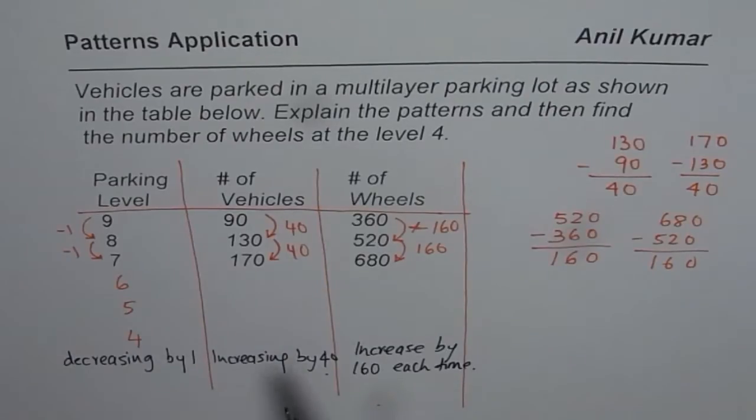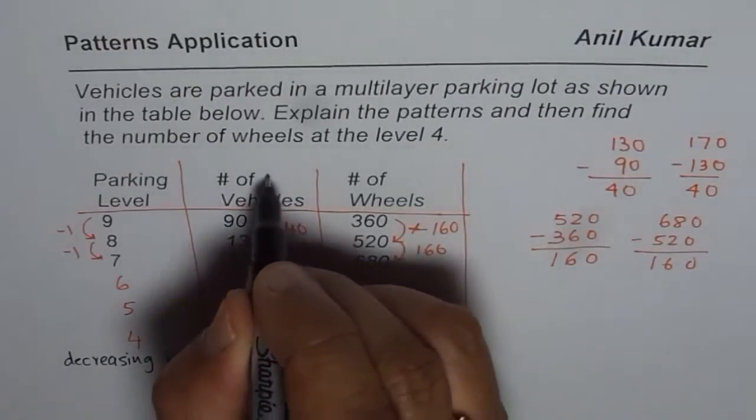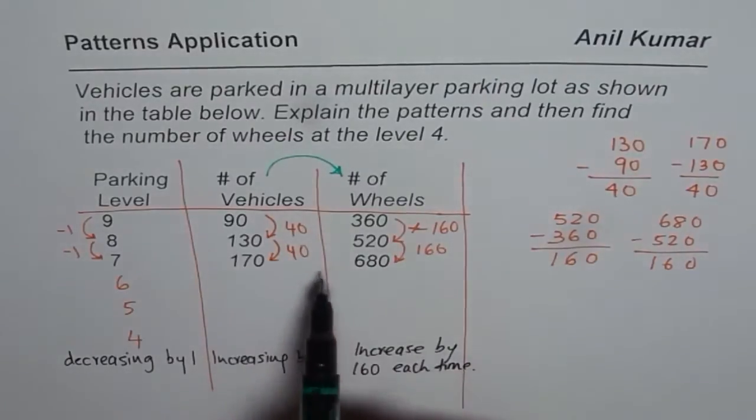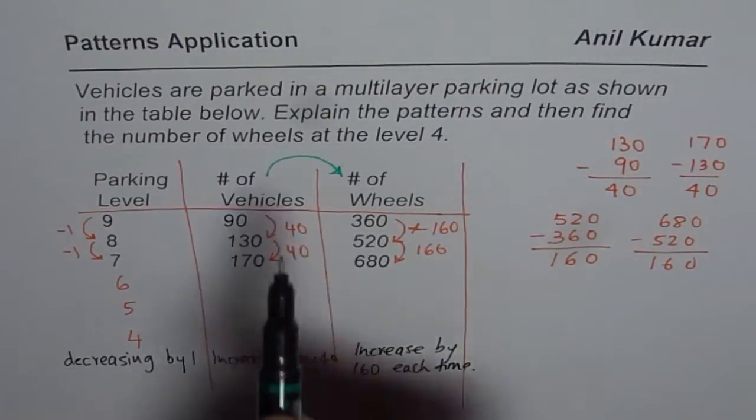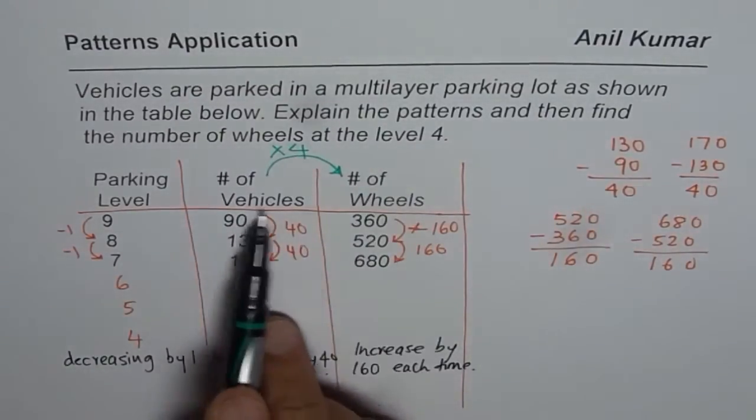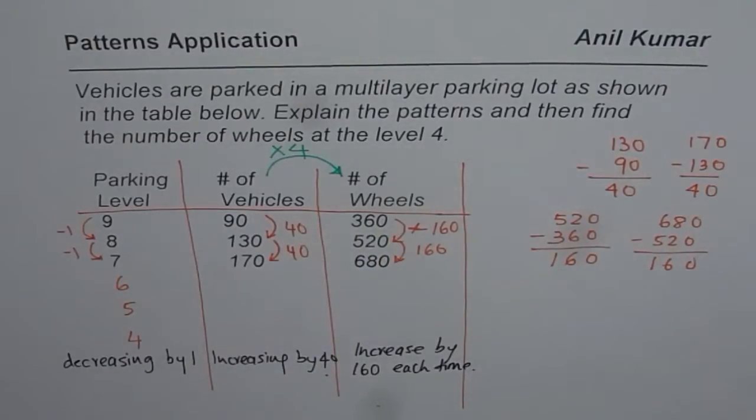Can you also find out a pattern between number of vehicles and wheels? Well, every car has 4 wheels it seems. 90 times 4 is 360. So it's times 4. That is another way of relating these two columns. Number of wheels is 4 times the number of vehicles. These are different patterns which we observe in the given information.